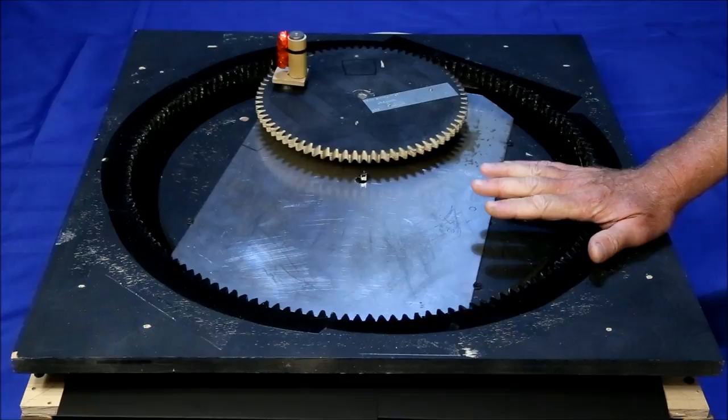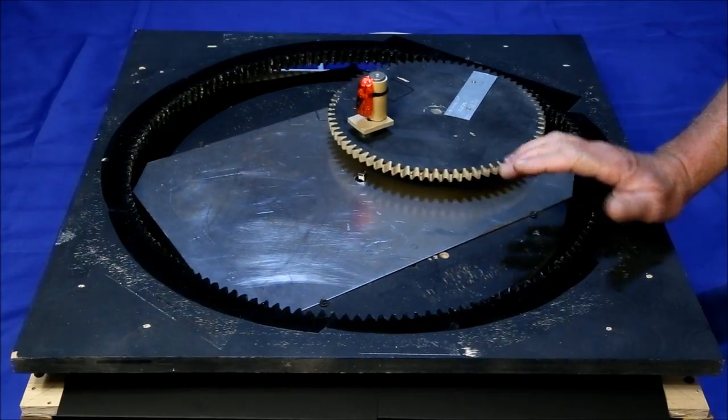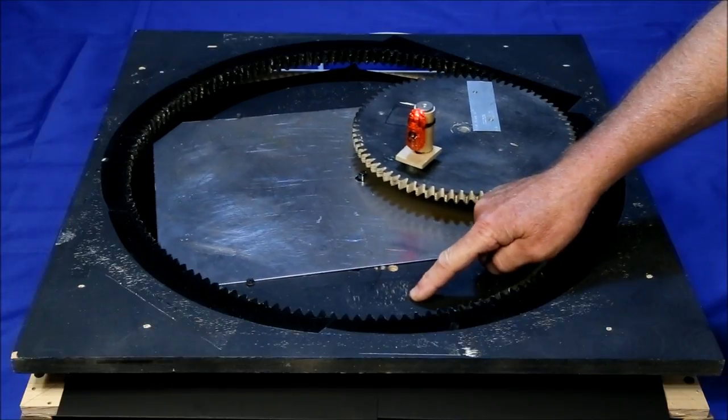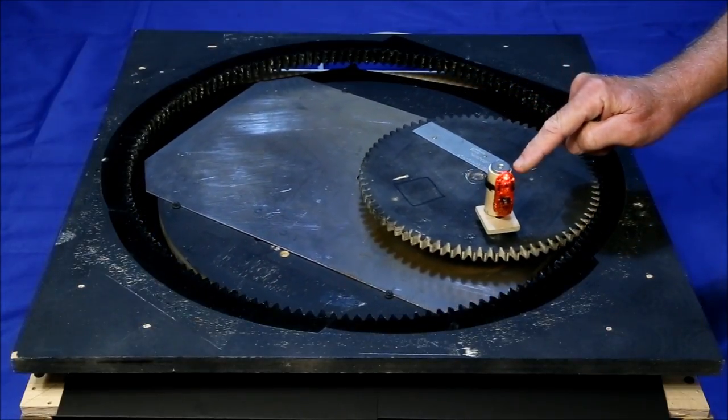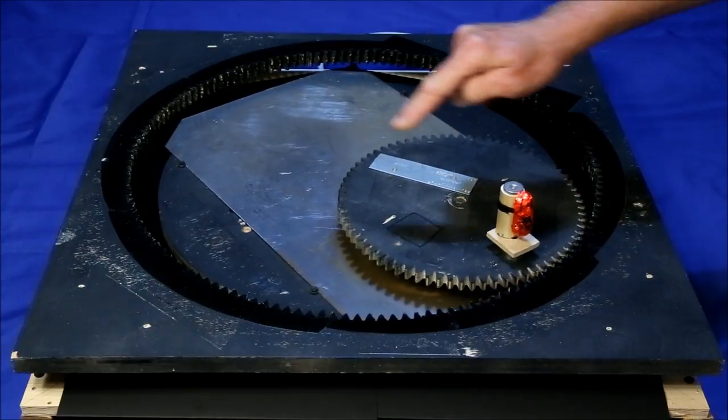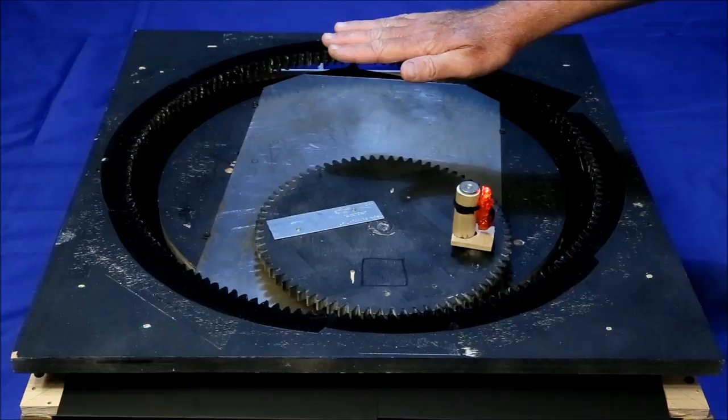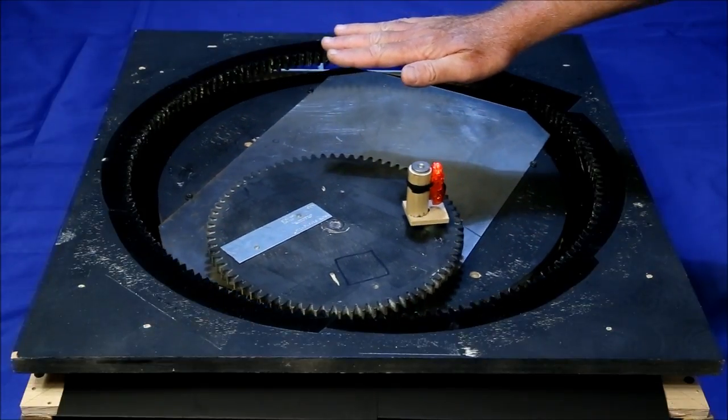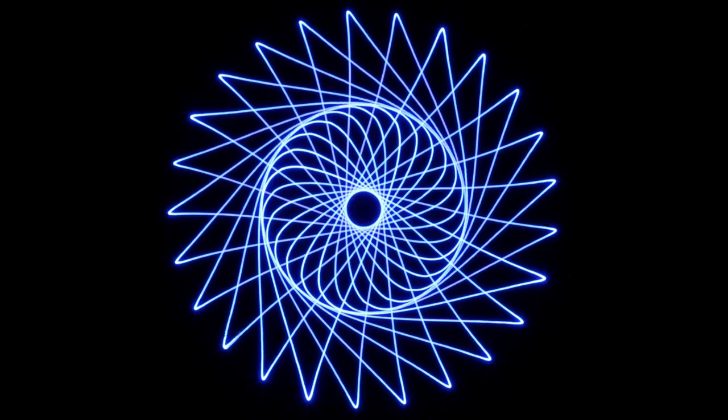In case you haven't seen the first video about the Illumicon, this drawing machine works by using a motorized turntable and sets of gears to move a miniature light in complex patterns. These patterns are recorded by a camera positioned above the machine with its shutter locked open to produce images like this.